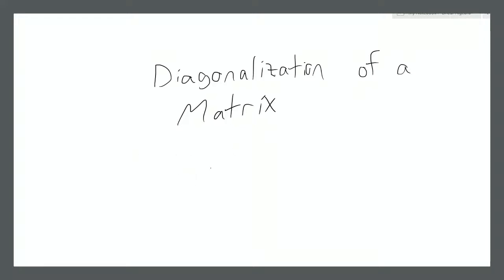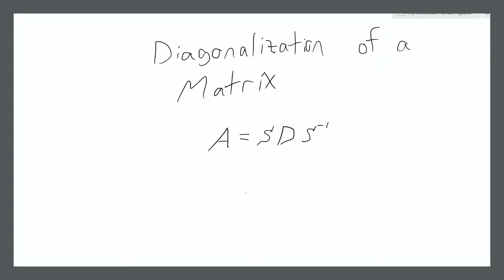So what is the diagonalization of a matrix? Let's say you have some matrix A. To diagonalize it would be to find matrices S, D, and S to the power of negative 1, such that A is equal to S times D times S inverse, where D is a diagonal matrix.